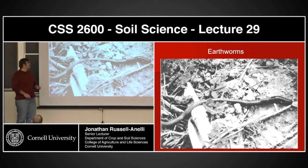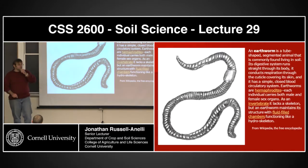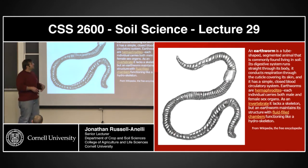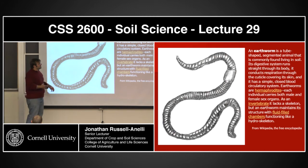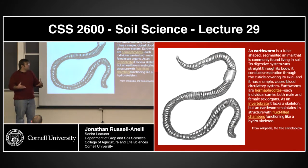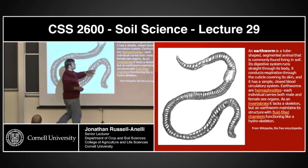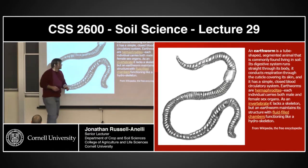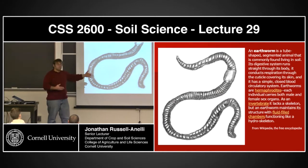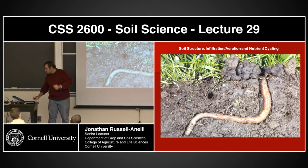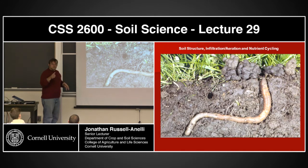So let's start with an earthworm. Pulling from Wikipedia: it's a tube-shaped segmented animal commonly found living in soil. Its digestive system runs straight through its body; it conducts respiration through cuticles covering its skin. It has a simple closed blood circulation system. Earthworms are hermaphroditic. They're invertebrates — they lack a skeleton but maintain structure with fluid-filled systems that also help with mobility.